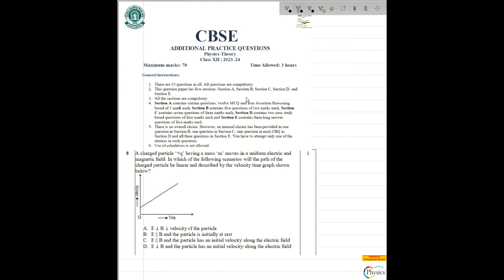There is a charge plus Q with mass, moving into a uniform electric and magnetic field. In which of the following scenarios will the path of the charged particle be linear? We will discuss what is the meaning of the word linear described by the velocity-time graph.